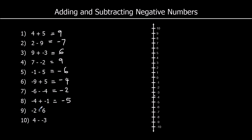Question 9: starting at negative 2, going down 6, gives negative 8. Question 10: starting at 4, taking away a negative 3 is the same as adding, so 4 plus 3 is 7.